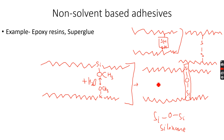The siloxane cross-link is what makes these non-solvent based adhesives very special and very strong. There are several polymer chains inside the adhesive — obviously not just one — so there will be a giant network of cross-linking. Due to this giant network, they will be very strong and form a very compact and strong structure.